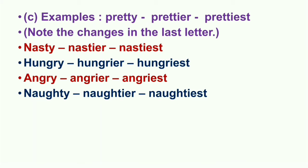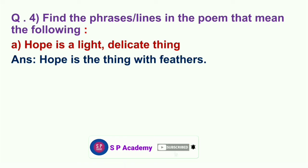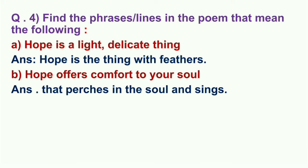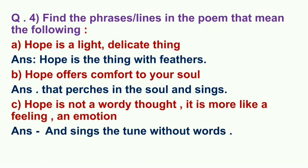Question number four: Find the phrases or lines in the poem that mean the following. A: Hope is a light, delicate thing - Answer: Hope is the thing with feathers. B: Hope offers comfort to your soul - Answer: that perches in the soul and sings. C: Hope is not a worldly thought, it is more like a feeling, an emotion - Answer: and sings the tune without words.